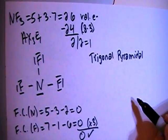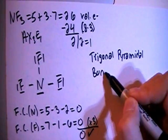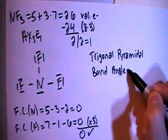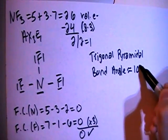And when we have trigonal pyramidal shapes, that means that the bond angle is going to be approximately 107 degrees, all right?